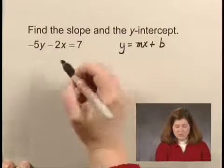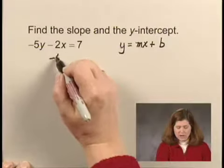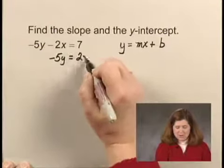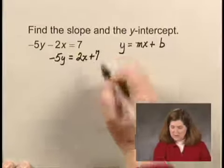We'll begin by adding 2x to both sides of the equation to get -5y = 2x + 7.